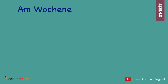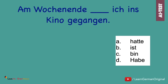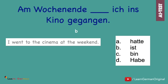The next one is: Am Wochenende... Ich ins Kino gegangen. Here's the answer: Am Wochenende bin ich ins Kino gegangen. The helping verb with gehen in Partizip Perfekt is sein, and correctly conjugated here: bin.